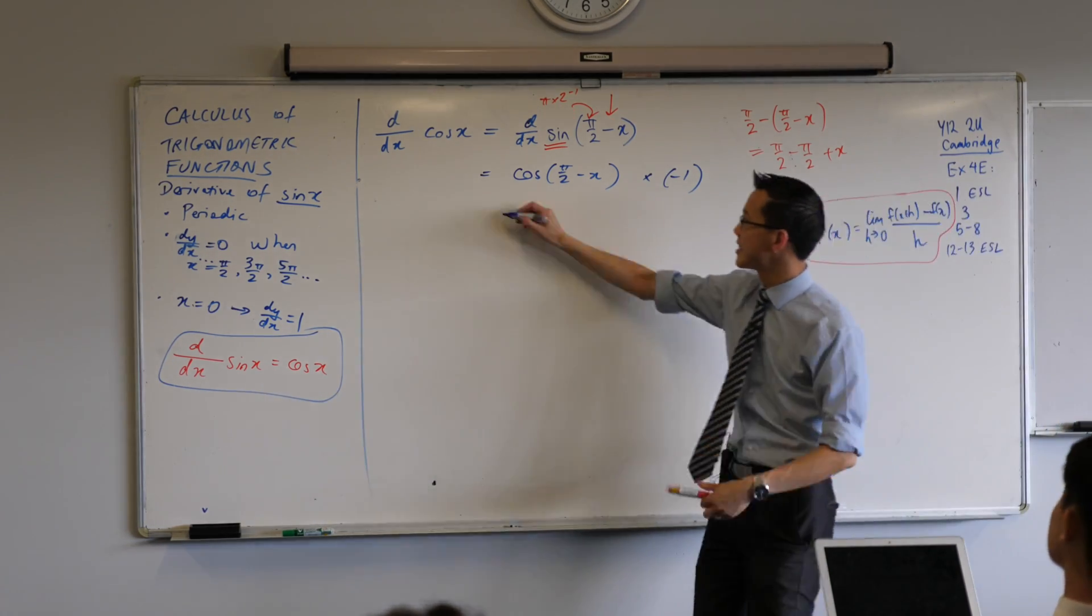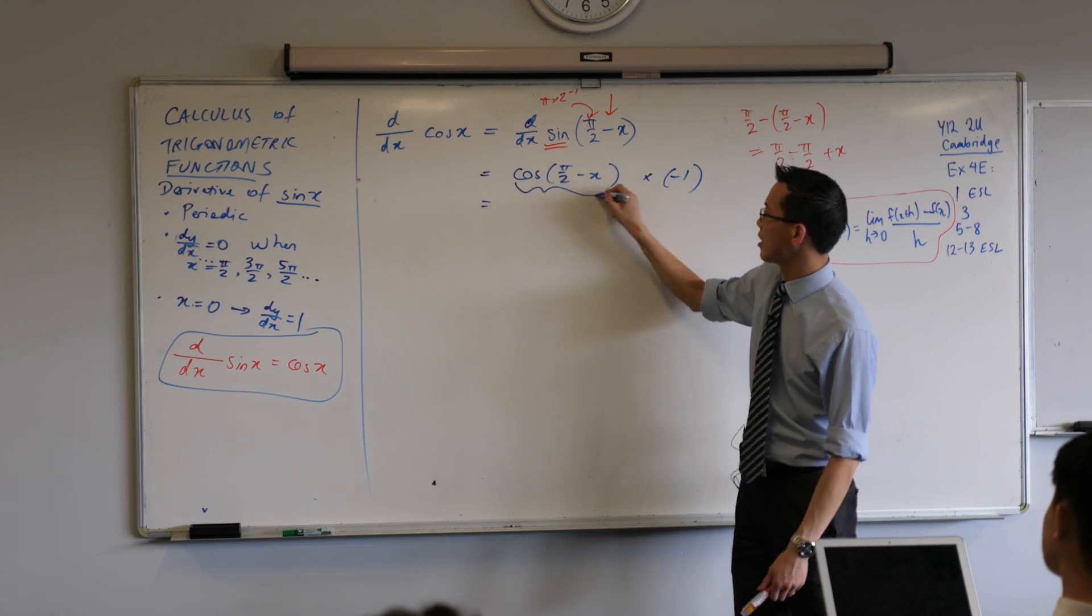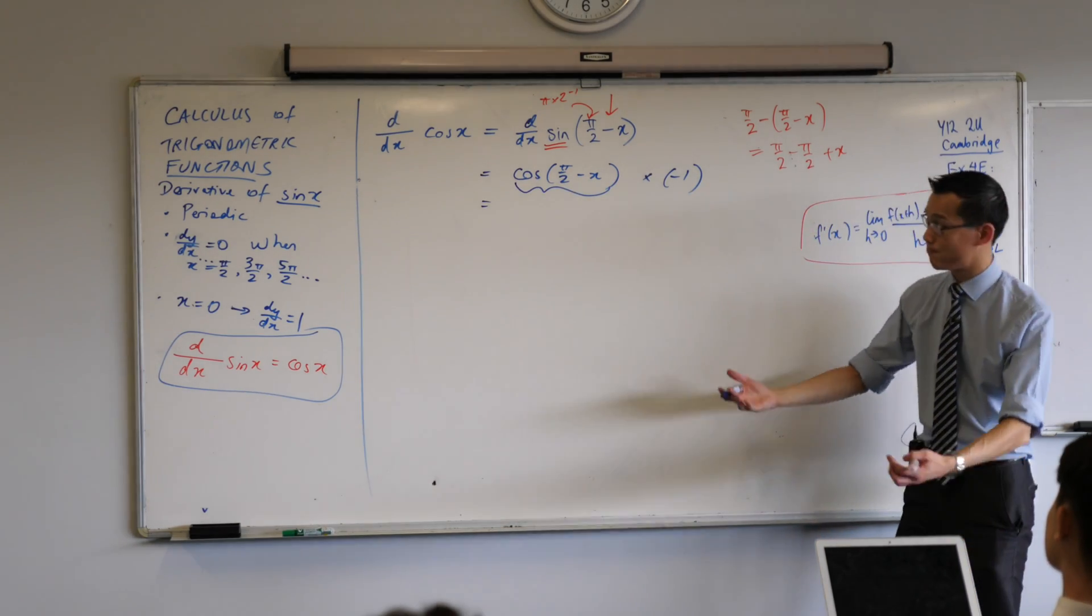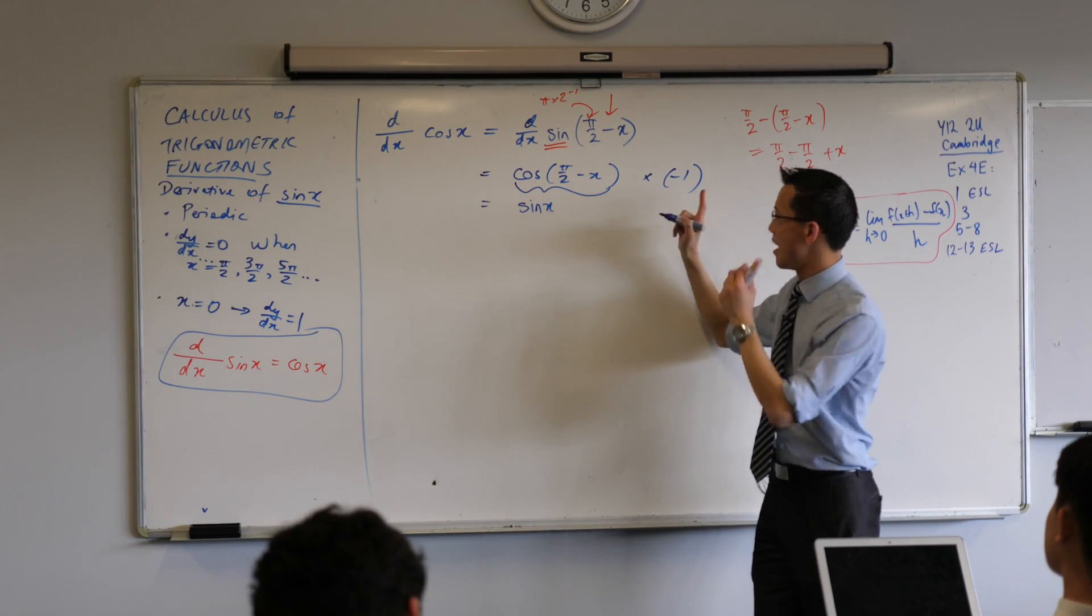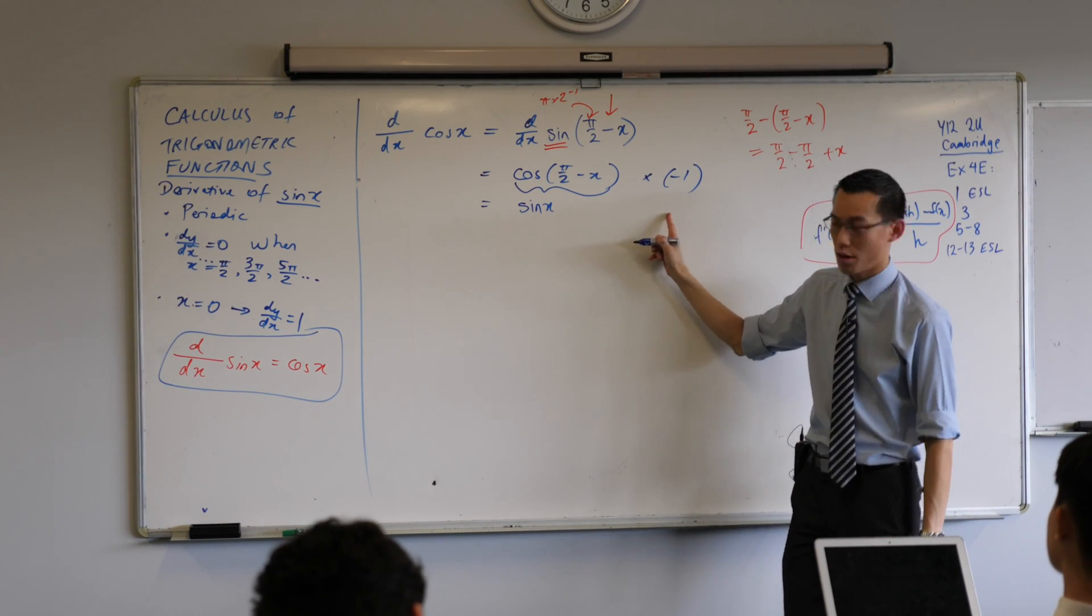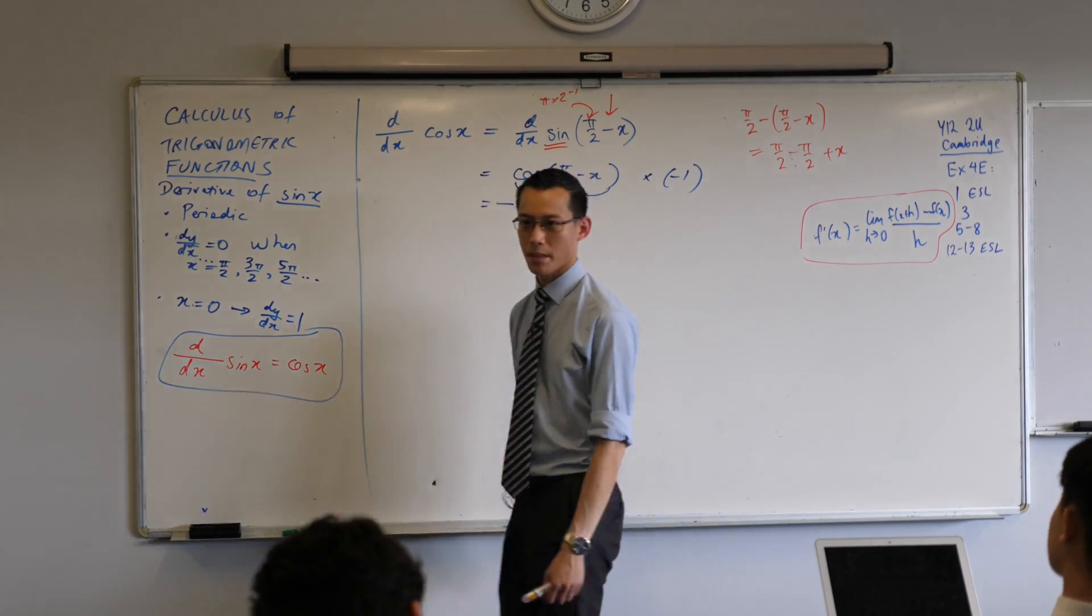So therefore, I can take this and I can convert it back into sine. That's where I came back from, right? So this is just sine x. And that minus 1, I'm going to put it at the front.